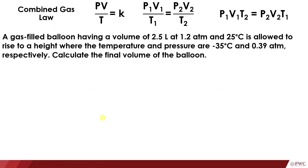Let's apply this to a word problem. A gas-filled balloon has a volume of 2.5 liters at 1.2 atmospheres and 25 degrees Celsius, and is allowed to rise to a height where the temperature and pressure are negative 35 degrees Celsius and 0.39 atmospheres, respectively. Calculate the final volume of the balloon. Here we have pressure, volume, and temperature — let's write the givens first.